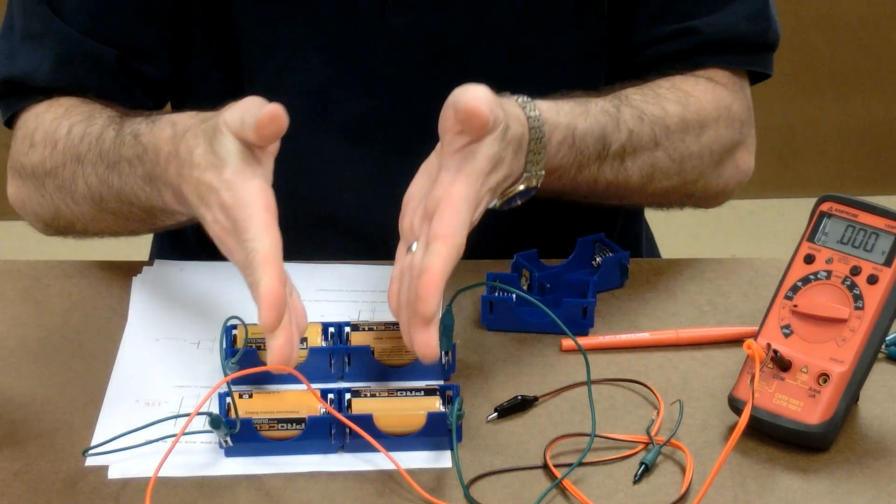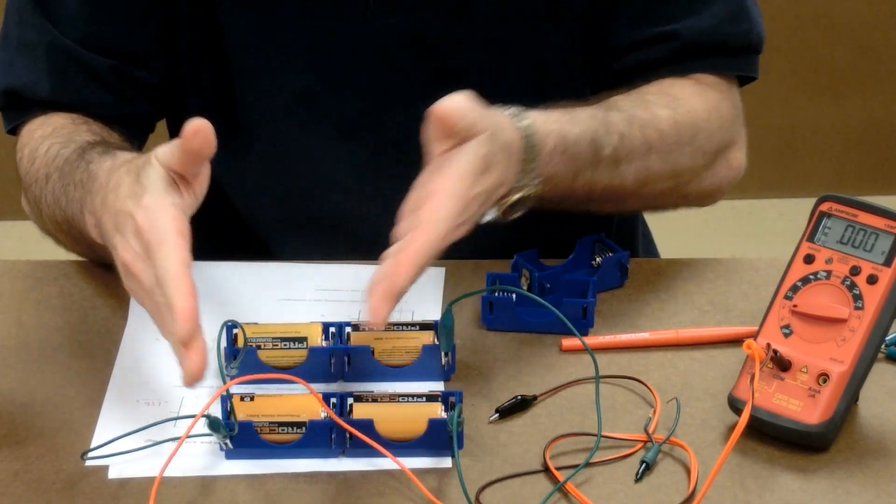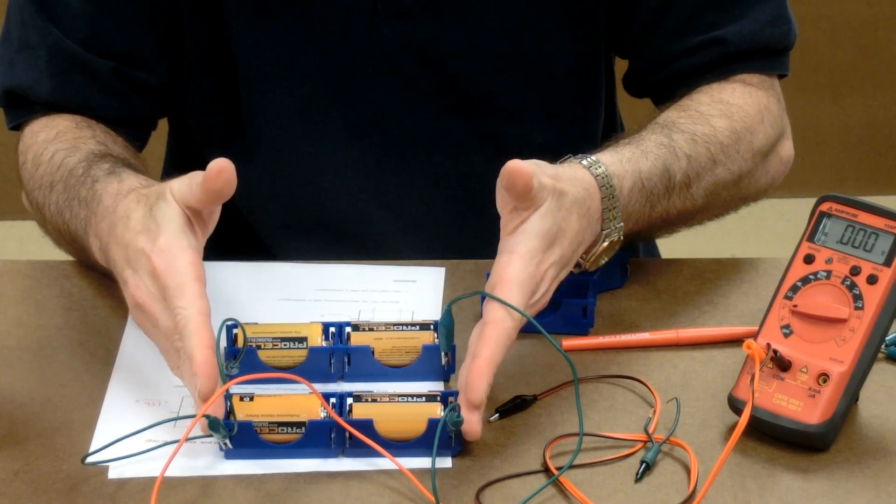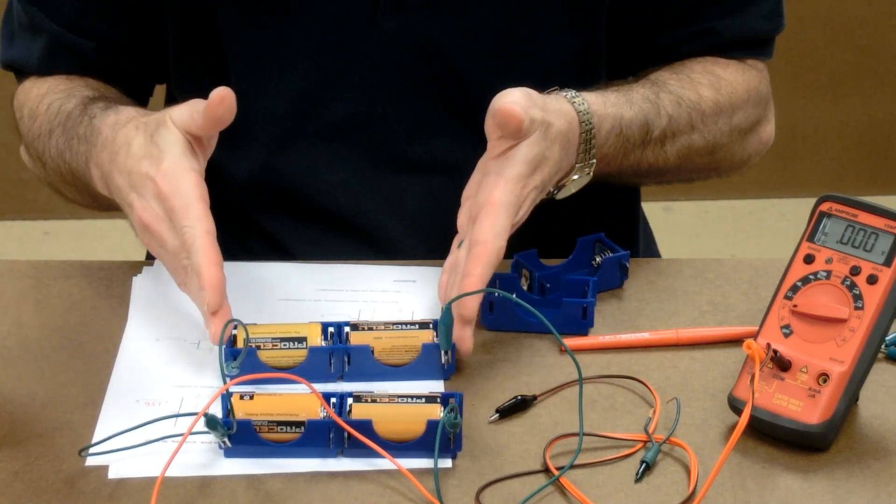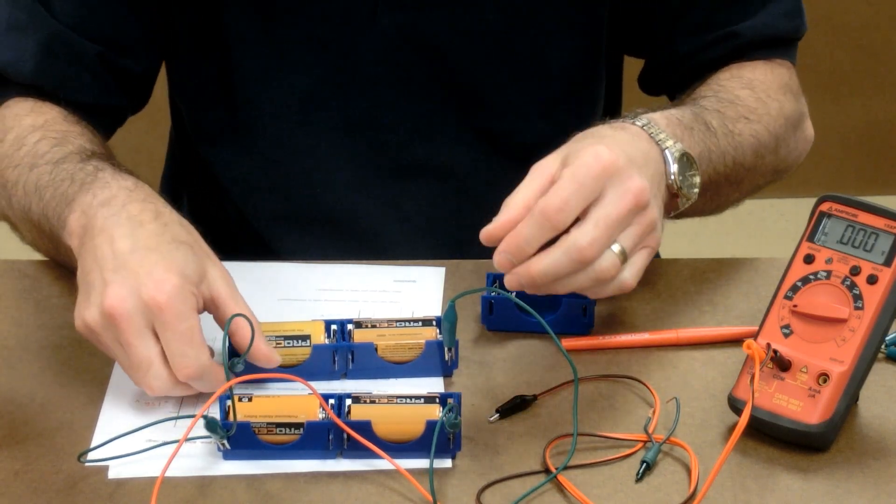So, effectively, putting two cells in series, a 1.6 and a 1.6 gives us 3.2. Adding another 3.2 in parallel doesn't change the voltage, but it would make it last twice as long.